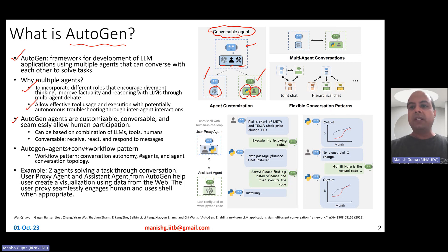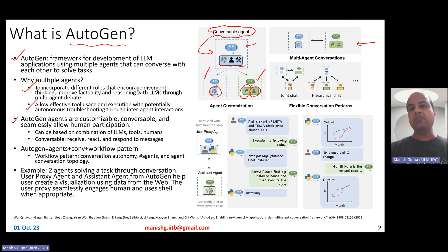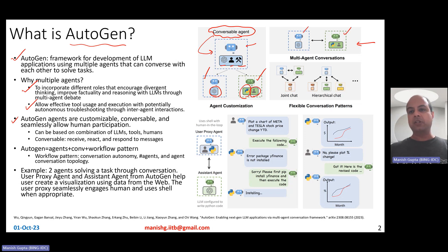Autogen also allows for multi-agent conversations. It allows you to create agents — which can be LLMs, human, or tool — and also allows you to have conversations between these agents. For example, here is a conversation between an agent which uses LLM versus an agent which uses human and a tool.